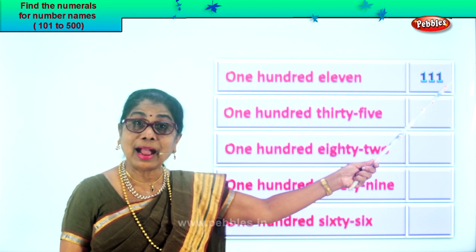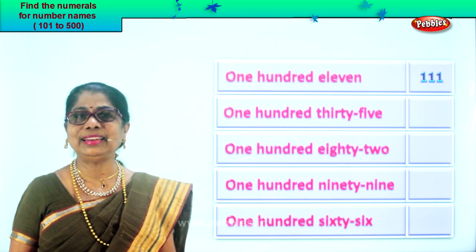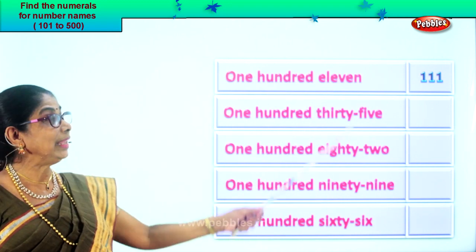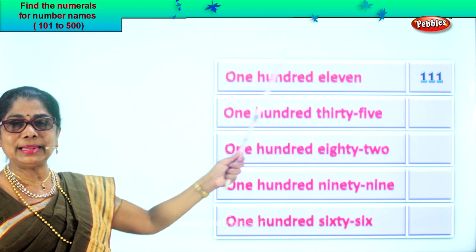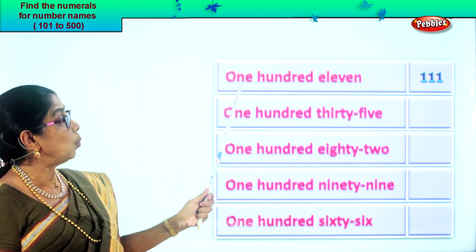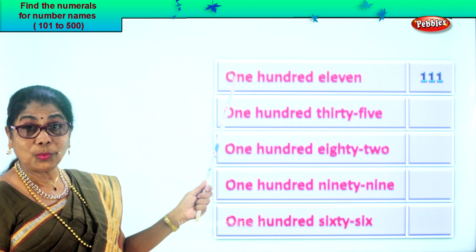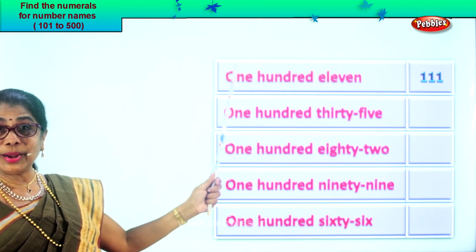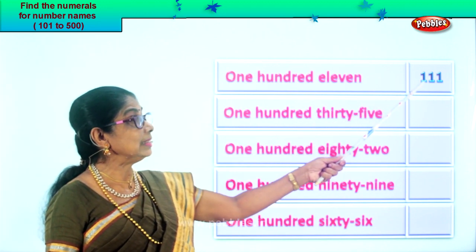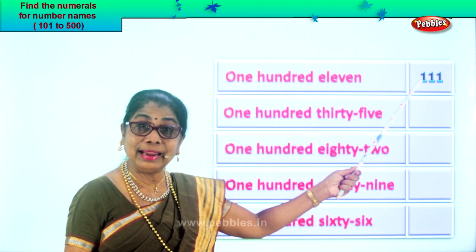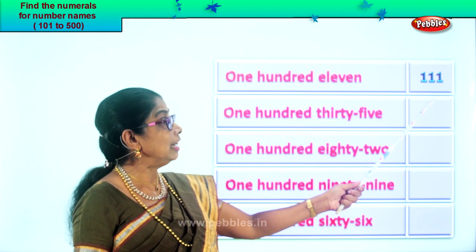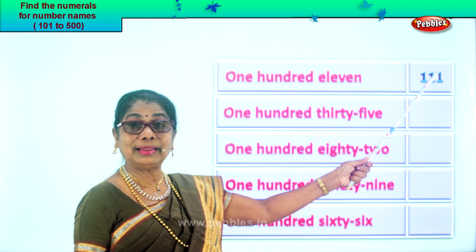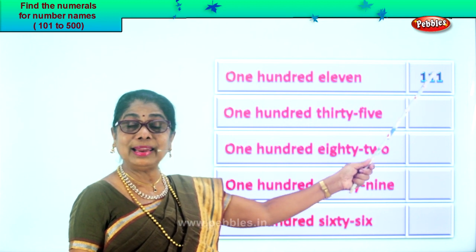Read that: one hundred eleven. You got it? When you get it like this, think of the place value. Eleven gives you ones and tens; hundred gives the hundred place. One hundred eleven. This is given to you: one hundred eleven. Hundred place one, tens place one, ones place one — eleven. One hundred and eleven.